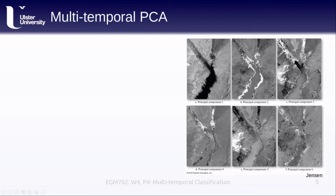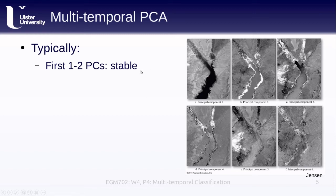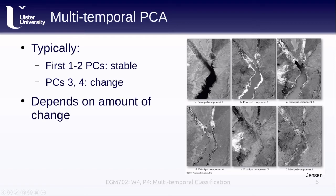If we look at multi-temporal principal component analysis, typically the first one or two principal components are going to be stable, representing the constant pixels primarily. The third and fourth principal components tend to represent pixels that have changed. In this example, principal component two is where the change has taken place and principal component one is the stable component. Looking at principal components five and six, you can see this is mostly sensor noise. Which principal component captures how much change depends on the amount of change between the two images.